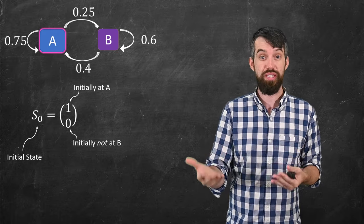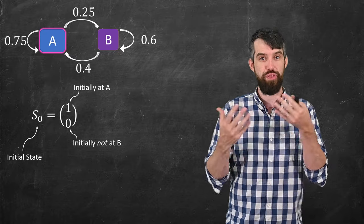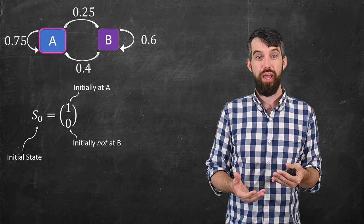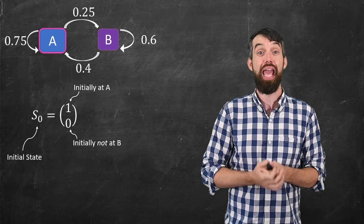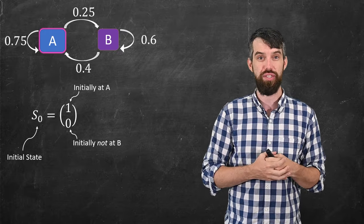If you had more components in your system, A, B, C, for example, then you'd have three components in your vector. And the fact that it says 1 and 0 means there's a 100% probability that it starts in state A and a 0% probability it starts in state B.